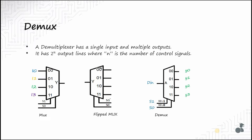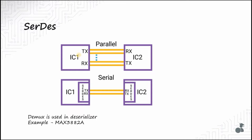Let's see a practical application of the demultiplexer. For fast data transfer, data must be sent in parallel, but this requires a larger number of I/O pins at both the transmitter and receiver chips. Due to limitations on the number of I/O pins available, data can be serialized and then sent, requiring only two pins at each end. For converting parallel data to serial and vice versa, you need a parallel-to-serial and serial-to-parallel converter. In communication systems, this circuit is known as SERDES — the serializer/deserializer. The demultiplexer is used in the deserializer circuit.